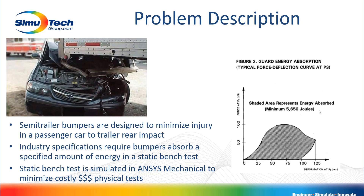There are standards in the industry in both the United States and Canada for the amount of energy that the bumper must absorb in a static bench test. A chart from this is shown here on the right. On the horizontal axis, we show deformation of the bumper at a load applicator point in millimeters, and on the vertical axis we show force in kilonewtons. So the area under this curve is effectively the energy absorbed by the bumper when it's deflected. This is an expensive physical test to run in a lab, and it can be simulated much more cost-effectively in ANSYS Mechanical.